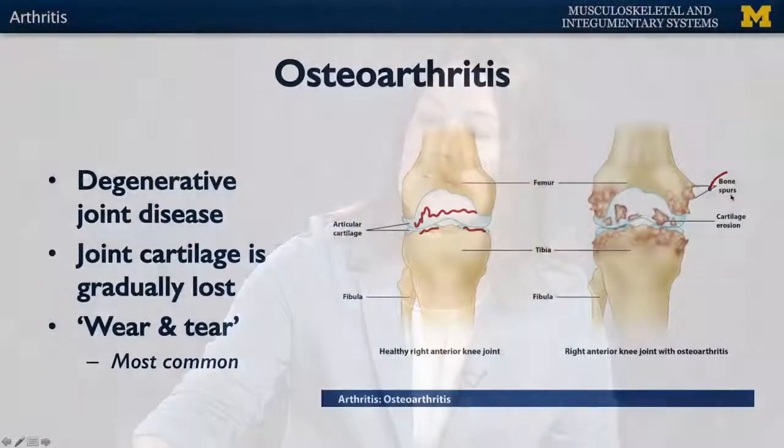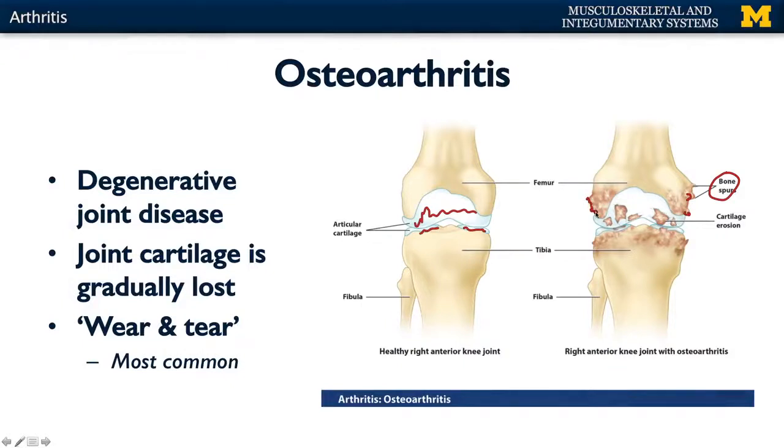Bone-on-bone contact leads to a lot of other things — additional erosion of the surrounding cartilage, and the friction between bones gets the osteoblasts moving faster, allowing for painful bony spurs in the region, as you can see here. These osteoblasts go into overdrive. While this is more common in older individuals, frequent runners and athletes can experience this wear and tear earlier.